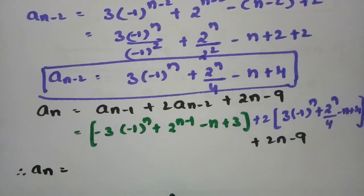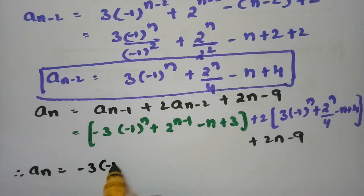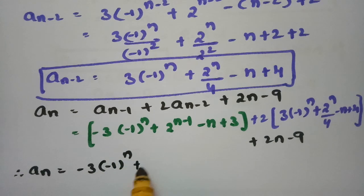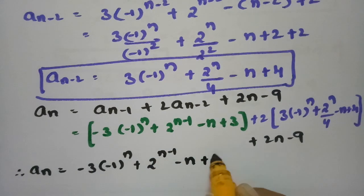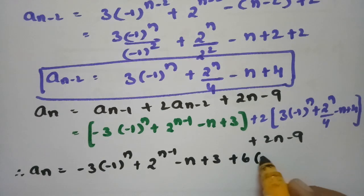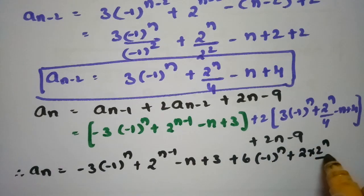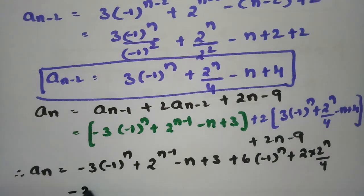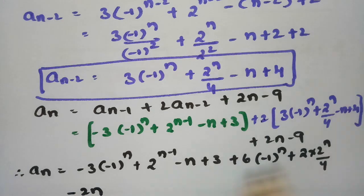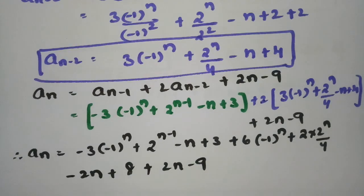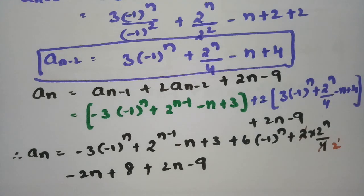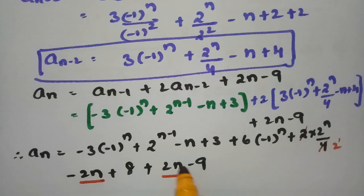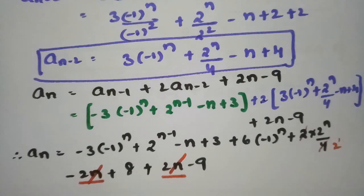After multiplying: -3·(-1)^n · 2^(n-1) - n + 3 plus 6·(-1)^n · 2^n/4 - 2n + 8 plus 2n - 9. Simplifying 2/4 gives 2^(n-1). The 2^n terms: -2^n + 2^n cancel. The n terms: -n - 2n + 2n = -n. Constants: 3 + 8 - 9 = 2.